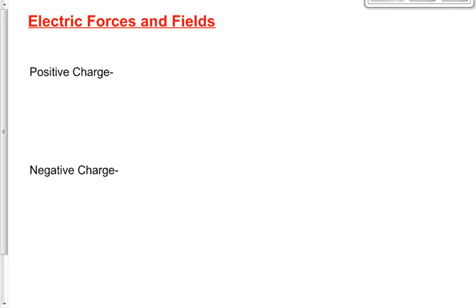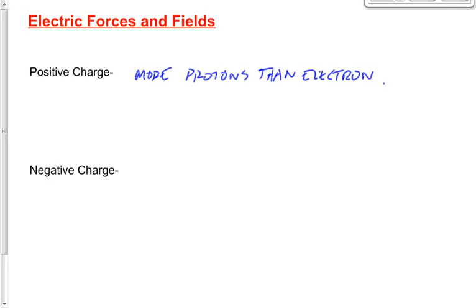Positive charge has something to do with protons, yes, but what exactly? If I get a balloon that I rub against my hair and make it positively charged, it doesn't mean the balloon is all protons. What does it mean? If that balloon is positively charged, it has more protons than electrons. The charge of a proton and an electron is so small that you'd have to have way more protons than electrons to make it a measurable positive charge.